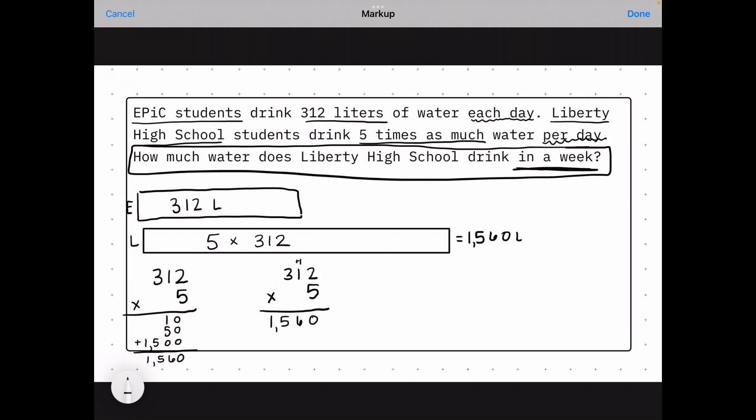How much water does Liberty High School drink in a week? Well, there's seven days in a week, and we figured out how much they drink in one day. So I could do 1,560 and add that up seven times. But we know that we can multiply this to be more efficient. So I can take this times 7, which represents how many days there are in a week.